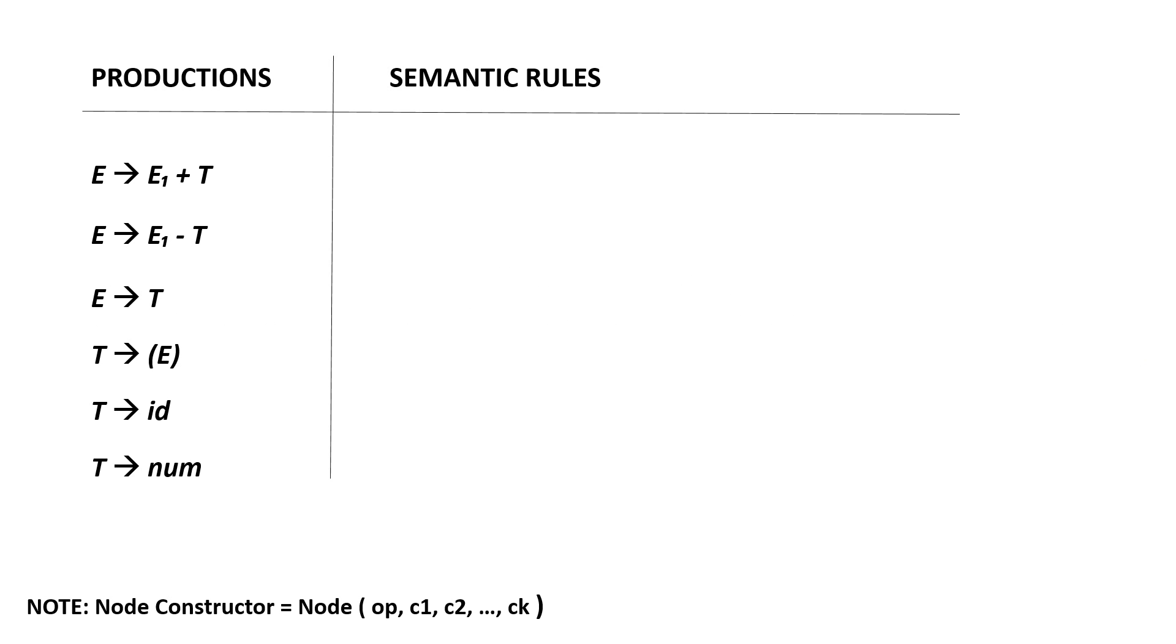For example, we have this set of productions. Now we will create the semantic rules. Remember that the node constructor is equals to node operator then child nodes closing parenthesis.